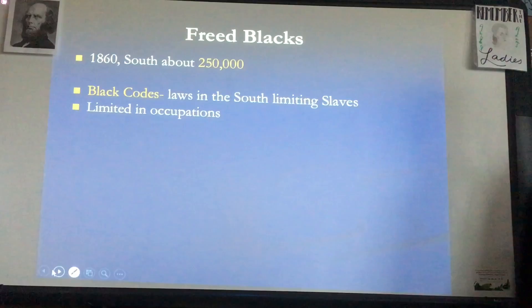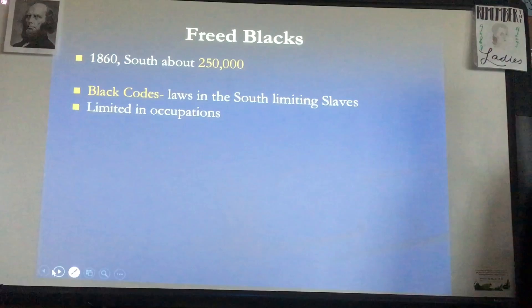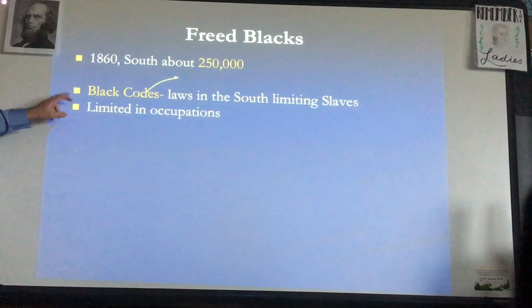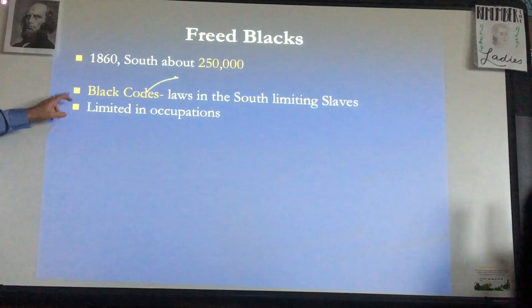Black codes — remember what these are. These are laws for blacks in the South, but they also had black laws in the North, and it depended by state. Just remember: black codes are laws in the South to monitor slavery and to monitor the behavior of blacks. We've already talked about racism in the North too.